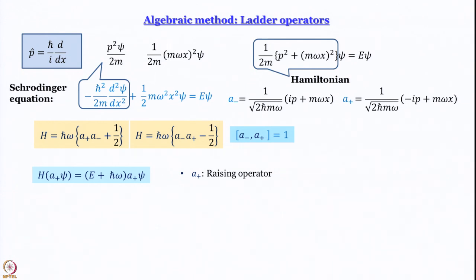Then we addressed the question: why is a_plus called a_plus and a_minus called a_minus? We proved that when a_plus operates on ψ, it produces a wave function with an eigenvalue of E + ℏω, where E is the energy of the original wave function ψ. When a_plus operates on that wave function, the energy of the resultant wave function is increased by ℏω — one vibrational quantum for this harmonic oscillator. That is why a_plus is called a raising operator: it takes us up by one step in the energy ladder.